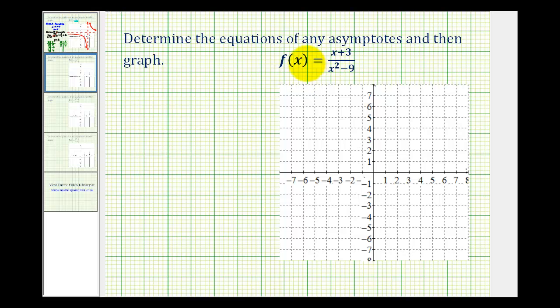We're going to determine the equations of any asymptotes and then graph the following rational function. Let's start by determining the vertical asymptotes.